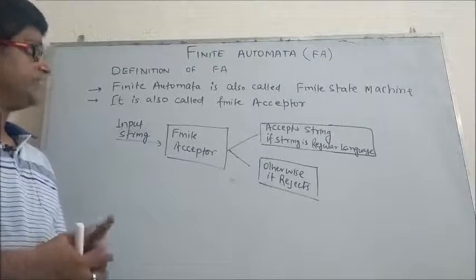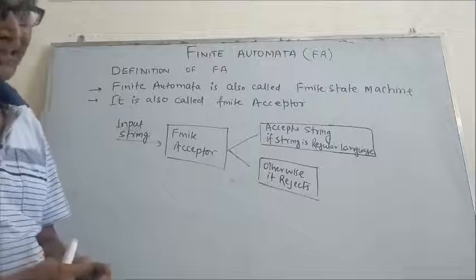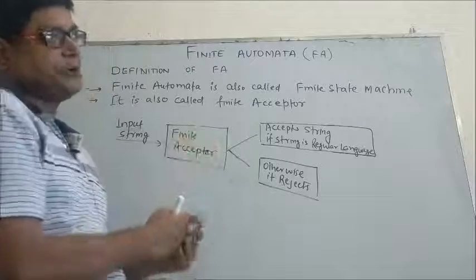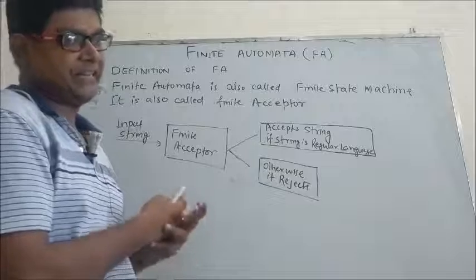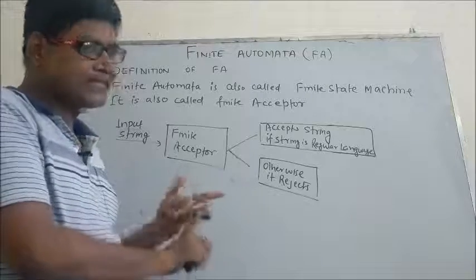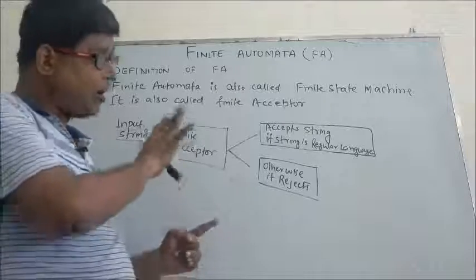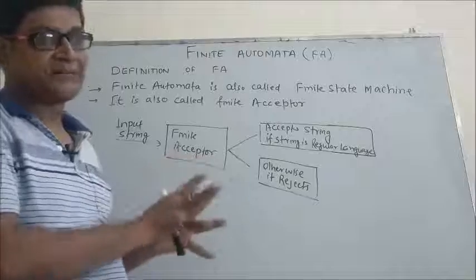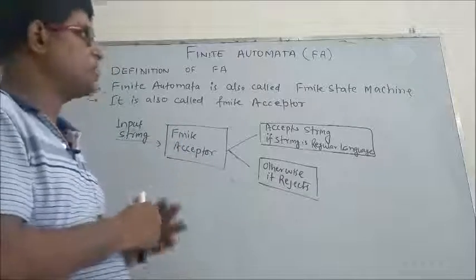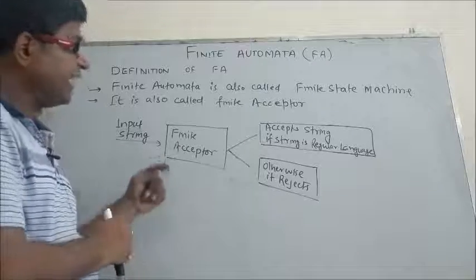Let's start with the first topic: the definition of finite automata. Finite automata is also known as finite state machine. It is called a finite state machine because when designing finite automata we deal with different states — an initial state, a final state, and intermediate states — but altogether we must have a finite number of states. It should not go infinite.